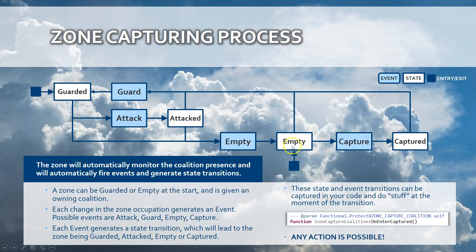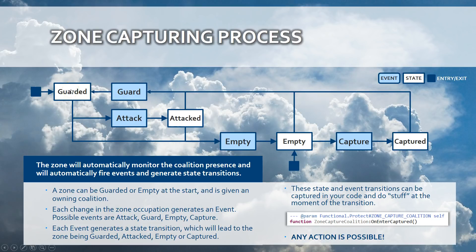In the beginning, a zone can be guarded or empty and owned by a coalition. When the zone is guarded it can become empty — because a unit was destroyed or left — or it can enter the attacked state if another coalition enters. Once it gets empty it can be captured, transitioning to the captured state. Once captured, the owning coalition transitions and the zone can return to guarded, but now owned by the other coalition.